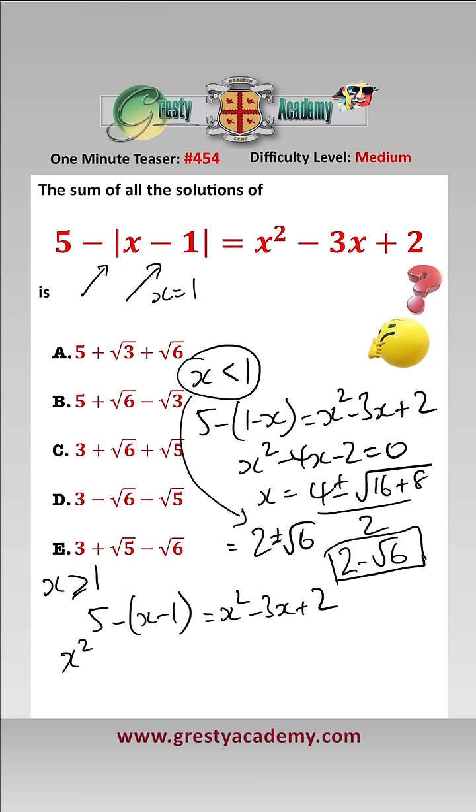That simplifies to x squared minus 2x minus 4 equals 0. Then using the quadratic formula, x equals 2 plus or minus the square root of 4 plus 16 over 2, which equals 1 plus or minus root 5.